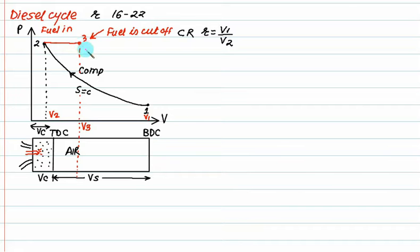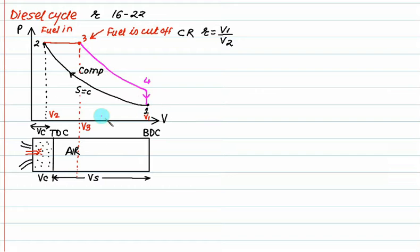From point three to point four we have isentropic expansion. The piston starts moving from three towards BDC and continues to point four, where at constant volume heat is rejected to complete the cycle. This expansion process is also carried out as an isentropic process.